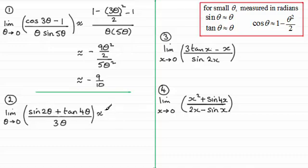Well sine two theta just is approximately two theta when the angle theta is small, and for tan four theta that will be just simply four theta and this will be divided by three theta. So we end up with six theta divided by three theta which is going to be approximately two.